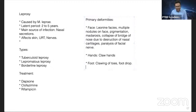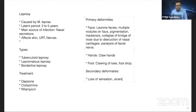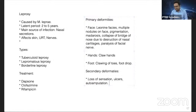Secondary deformities include loss of sensation due to nerve involvement, which can lead to ulcers, penetrating ulcers, and even auto-amputation — one of the characteristic features. Secondary deformities include involvement of the nose leading to loss of or impaired sensation, ulcer formation on fingers, deep penetrating perforating ulcers over the sole of the foot due to loss of sensation, and auto-amputation.